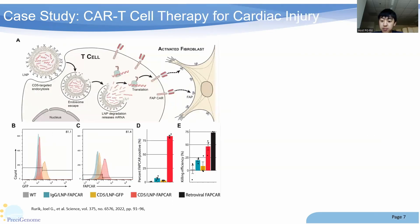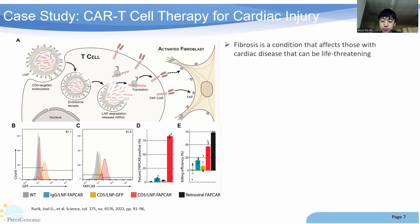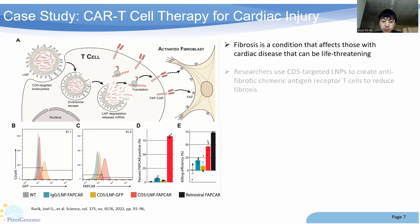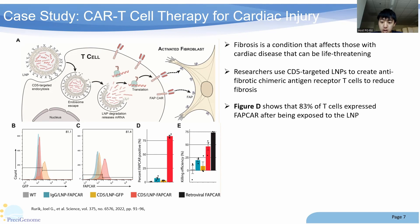This next case study is on CAR T-cell therapy, another emerging use of LNPs for cardiac injury and more specifically fibrosis. Fibrosis is characterized by thickening or scarring of tissue, which can lead to many health issues and risks. For this study, the researchers used CD5-targeted LNPs to create anti-fibrotic chimeric antigen receptor T cells in hopes of reducing fibrosis. Figure D shows that 83% of the T cells expressed the anti-fibrotic chimeric antigen receptor that the researchers were aiming for after being exposed to the LNP.